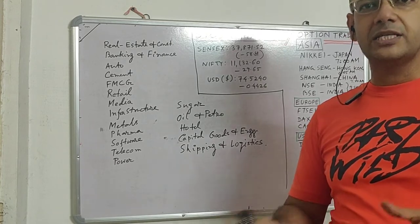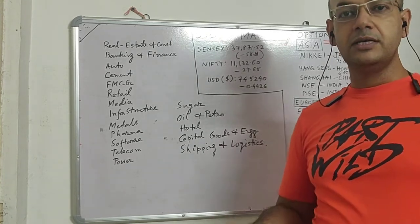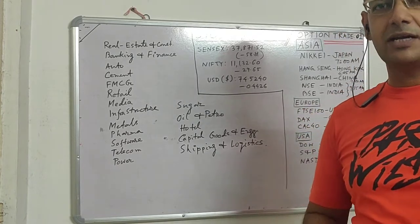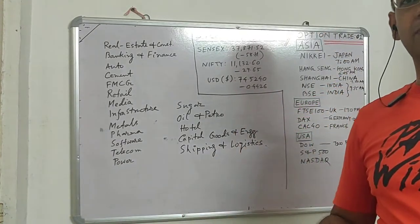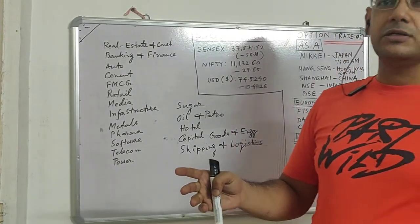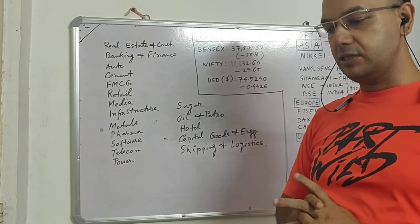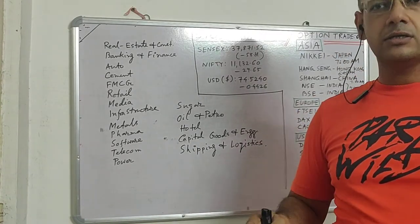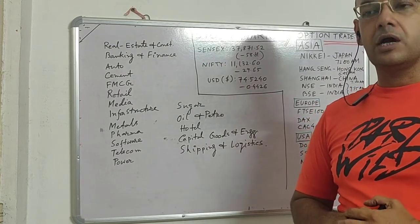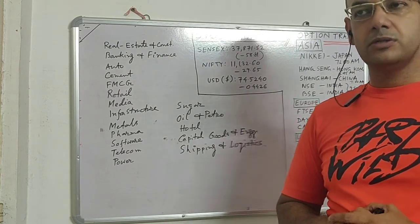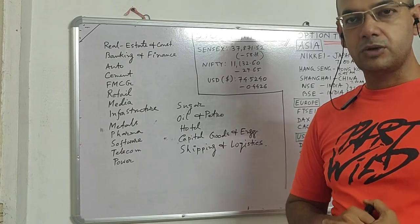Many people panicked, which caused a great downfall in the market. But one section of people started saying this is the right time for buying stocks. So I thought, let us understand what is the stock market, how it performs, and what are the tools or instruments available.